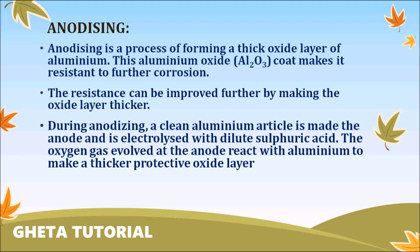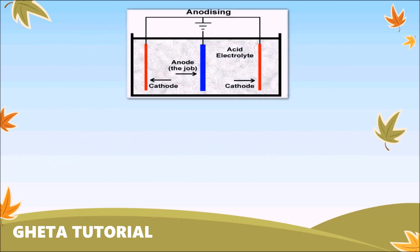Let us see how this process is conducted by looking at the figures. In this figure, we can see two electrodes. One is called the anode, which is blue in color, and another is called the cathode, which is red in color. The anode is a positive electrode and is always connected to the negative terminal of the battery, and the cathode is the negative electrode and is connected to the positive terminal of the battery.